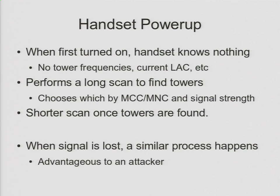So what happens when the handset turns on? How does the handset first find its very first tower? Obviously when it boots up, it knows nothing — it doesn't know where it is, what frequency it's on, it doesn't have any neighbors to look for, it doesn't know the current LAC. Nothing like that. So it does a very, very long scan over the entire band. Whatever towers it finds, it checks the MNC and the MCC, tries to make sure those are allowed networks based on what the SIM card will actually connect to, and then signal strength as well — it'll just connect to the strongest tower.